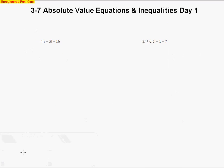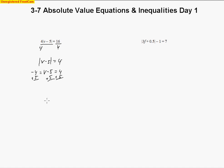Now let's look at some more difficult problems with more terms inside the absolute value bars. In the first one, the 4 is outside the absolute value bars, so we divide by 4 to isolate them. We get |V − 5| = 4. Setting V − 5 equal to 4 and negative 4, then adding 5 to all sides, we get V = 9 and V = 1 as the two solutions.